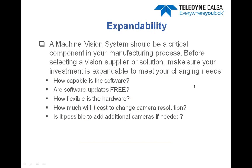A machine vision system should be expandable as well, since it can become a critical component of your manufacturing process. Before selecting a vision supplier or solution, make sure it's expandable to meet your needs. For example, is the software capable? Are software updates free? How flexible is the hardware? Can you add cameras to the system? Can you add different camera resolutions? And how easy is it to upgrade the software? These are all important considerations since a machine vision system can become a very critical process component in your manufacturing process.